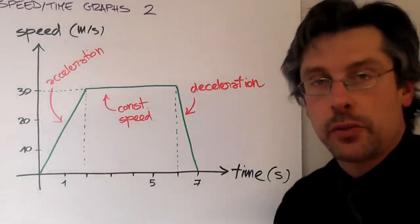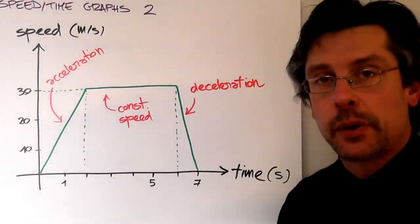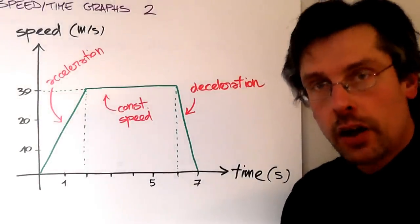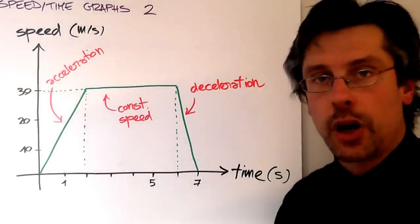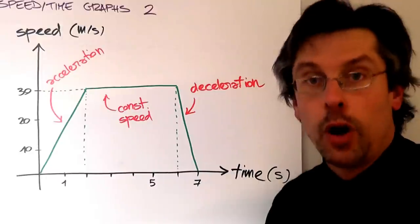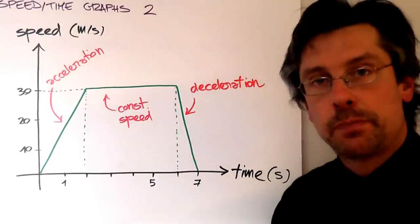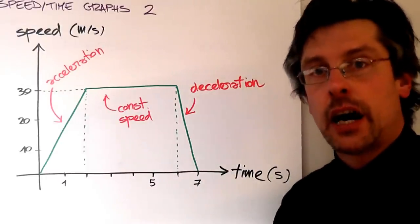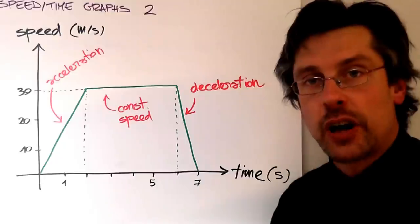In our previous lesson we saw that through a speed-time graph we can extract a lot of information about the motion of an object. First of all, and obviously, the speed of the object and the time it takes as it travels.